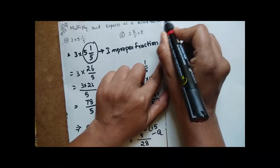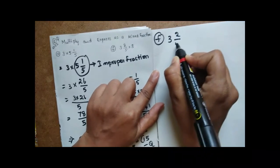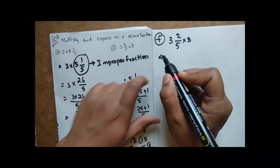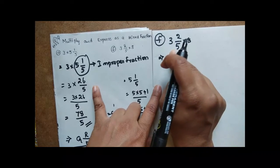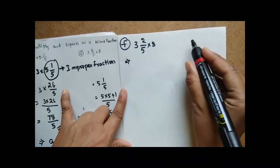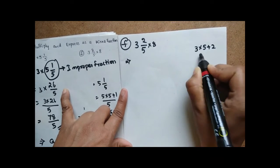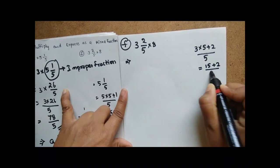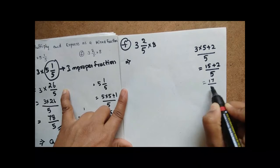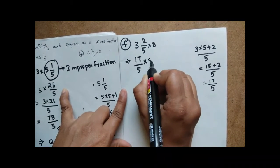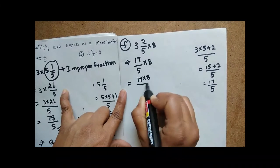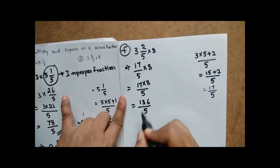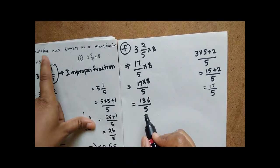Now the second question: 3⅖ into 8. We get a mixed fraction, so convert it to an improper fraction. 3⅖ becomes 3 into 5 plus 2 by 5, which is 15 plus 2 by 5, giving 17 by 5. So we now have 17 by 5 into 8, which means 17 into 8 by 5, giving 136 by 5.